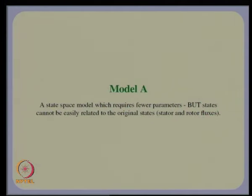Let us look at Model A. It is a state space model that directly uses the standard parameters, but the states cannot be easily related to the original stator and rotor fluxes. Remember that Model A, Model 1, and Model 2 all have the same transfer function — the main theme is that we try to take out a state space model that uses standard parameters.